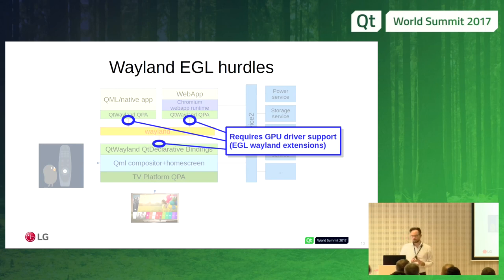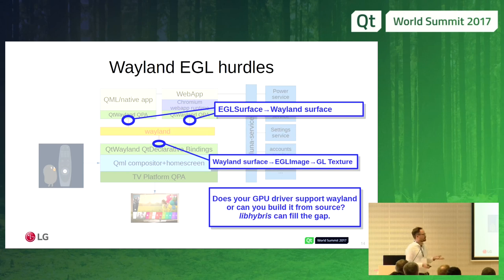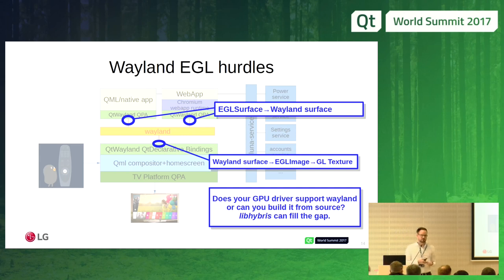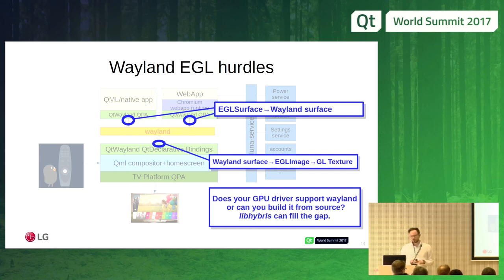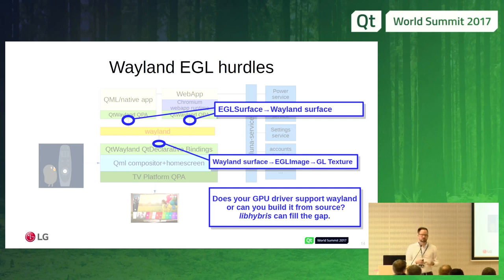If you want to ship a Wayland device, you need a GPU driver that supports Wayland. From the application side, the EGL driver needs to map an EGL surface to a Wayland surface, which you send over the Wayland protocol as a file descriptor. When the compositor receives it, it unwraps that file descriptor to get an EGL image back, binds it to a GL texture, and renders it using OpenGL.